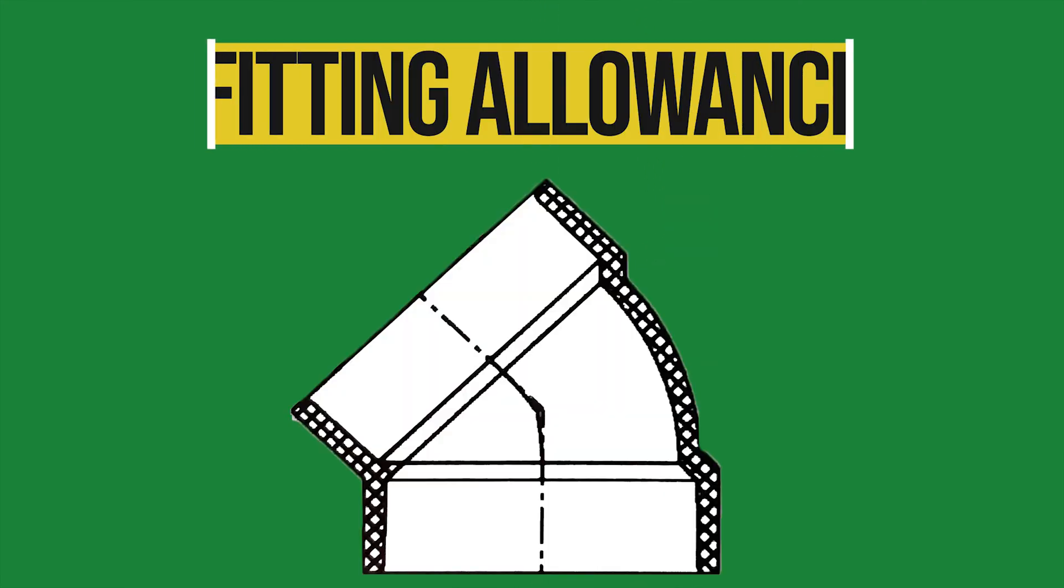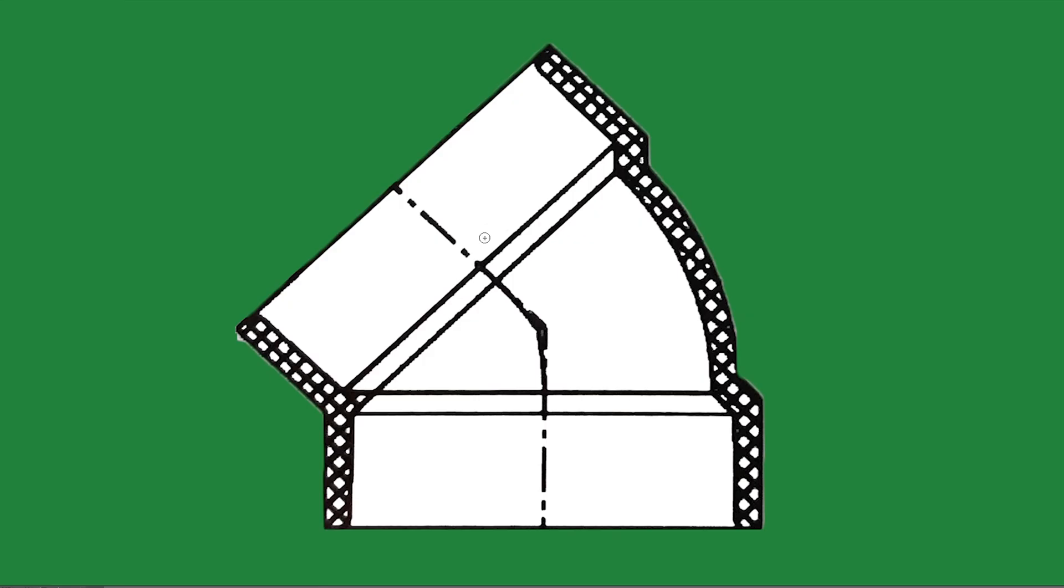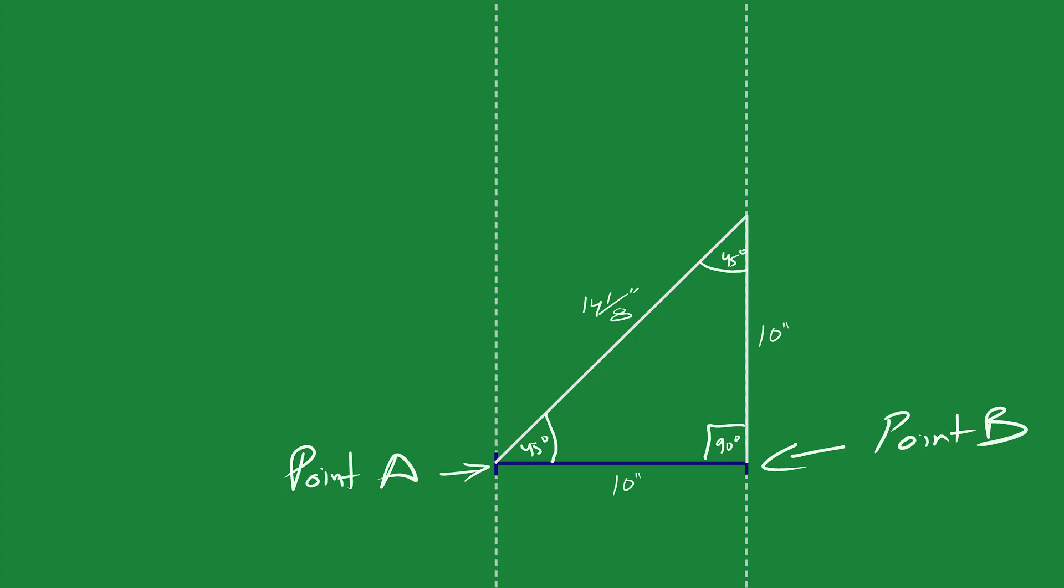Because there's one more step from here called the fitting allowance. To measure the fitting allowance, mark the center of the fitting and end of the hook. In our case it's a quarter inch. Now subtract a quarter inch twice because we are using two fittings. So 14 and 1/8 minus 2 quarters, so the final measurement will be 13 and 5/8.